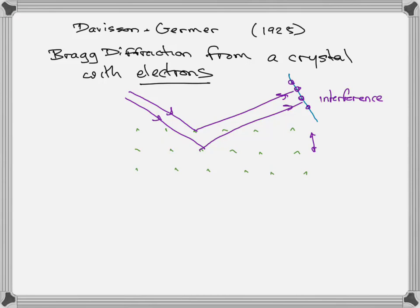De Broglie tries to explain the quantization condition by saying maybe electrons have wave-like properties, and Davison and Germer redid the Bragg diffraction experiment but with electrons from an electron gun, and indeed showed electron interference. We actually do this experiment in advanced lab, so if you're taking that course you'll be able to see this experiment done.